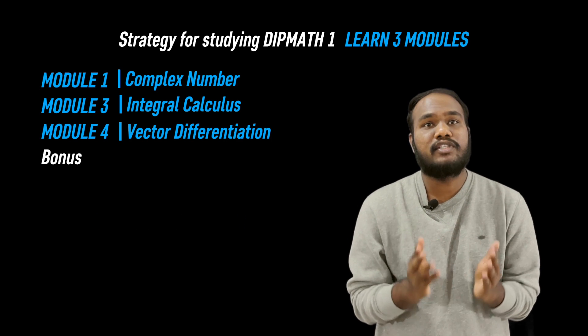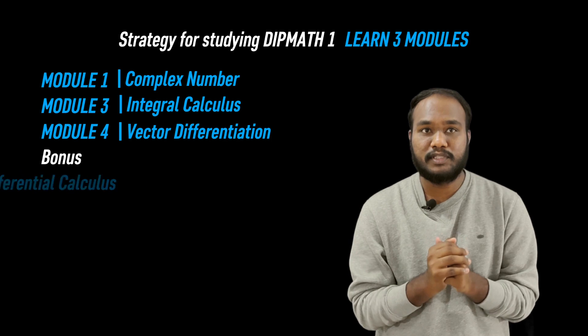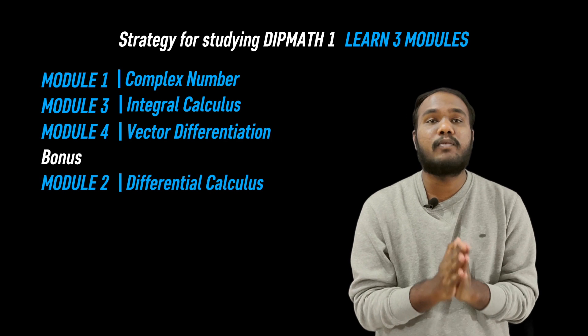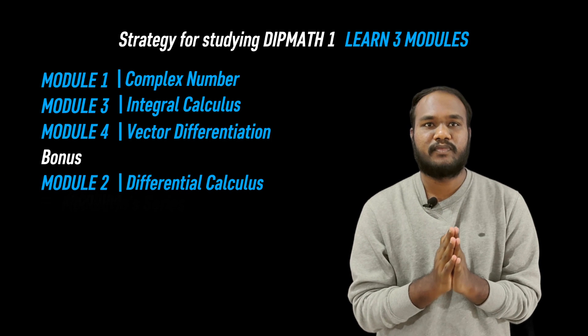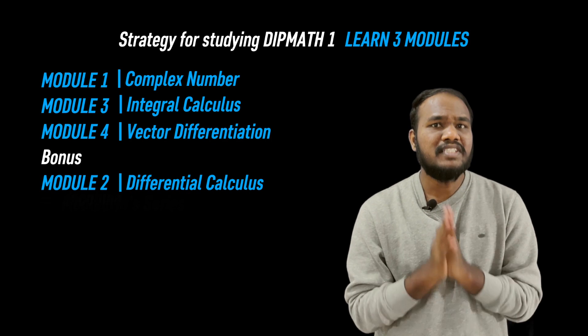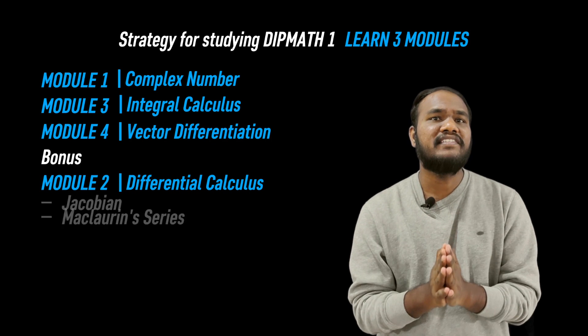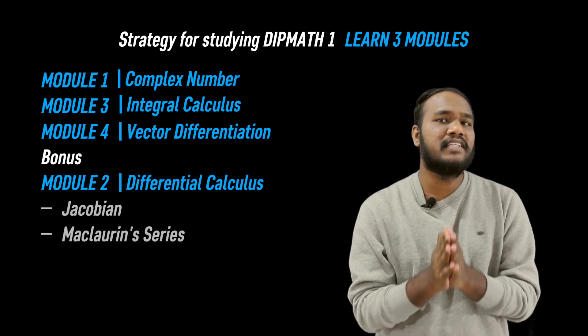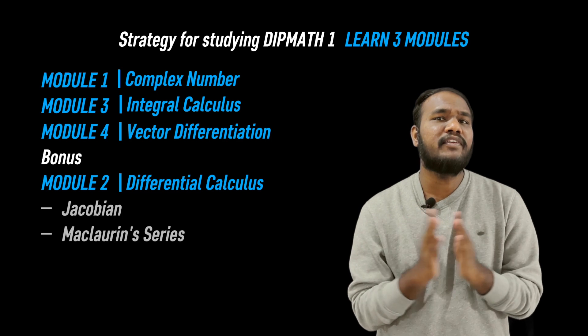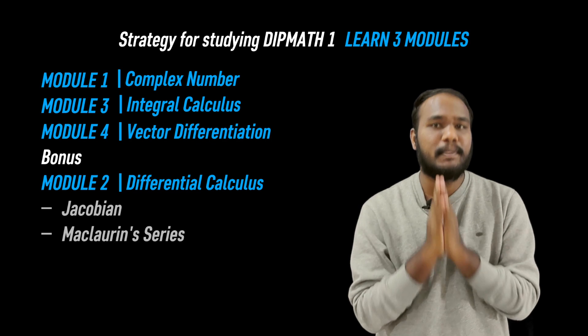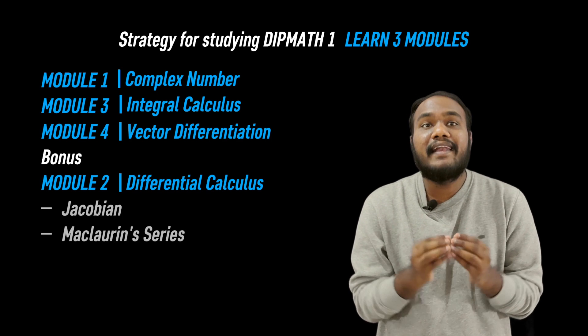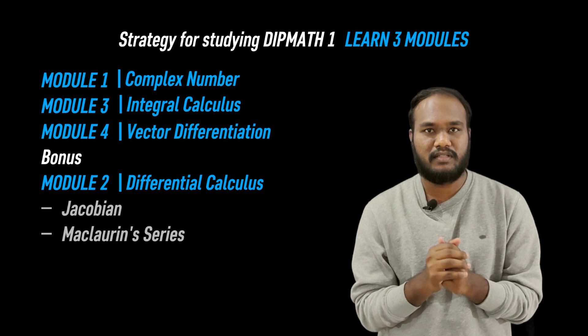Coming back to the bonus I promised you — it is from Module 2. Questions on Jacobians and McLaurin series are repeated from previous year question papers and they are easy to solve.